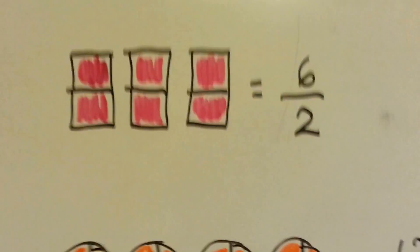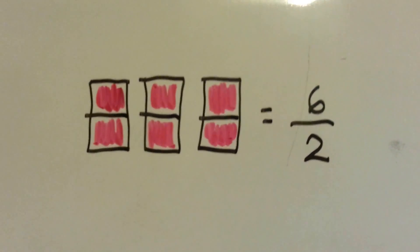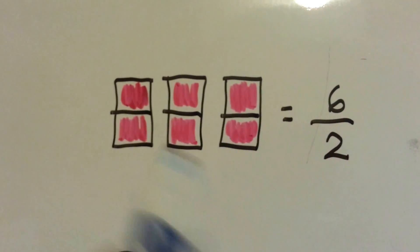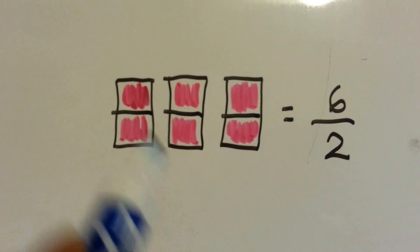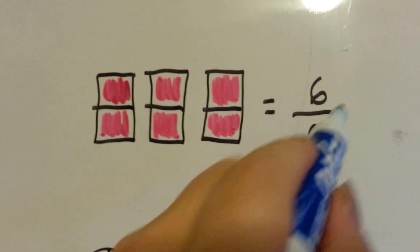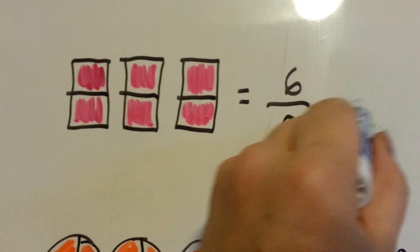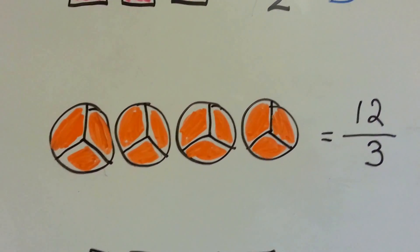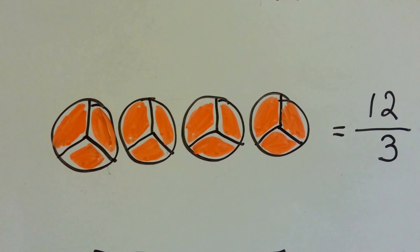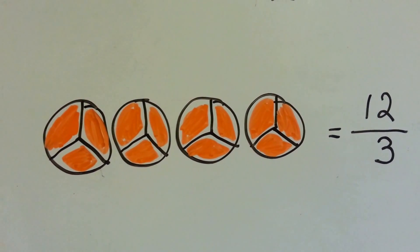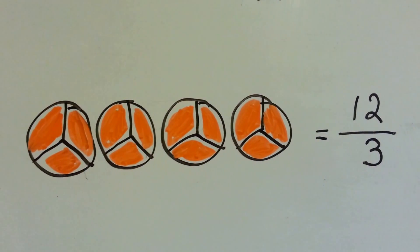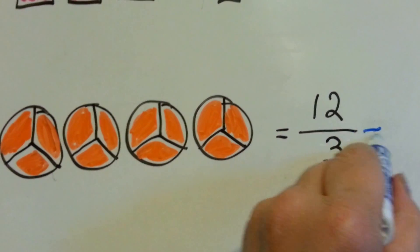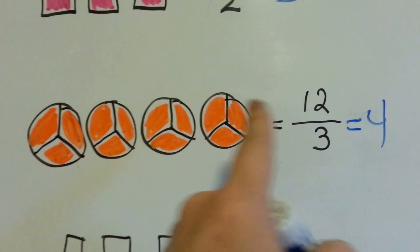What is six divided by two? Six pieces of twos — six divided by two is three. What's twelve divided by three? Twelve thirds — twelve divided by three is four. We've got four whole.